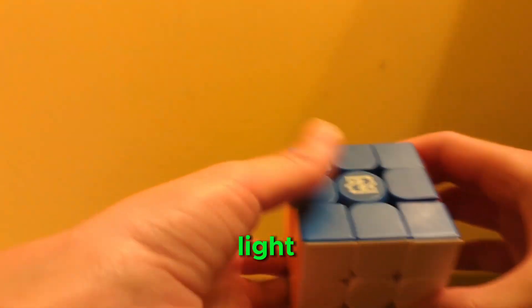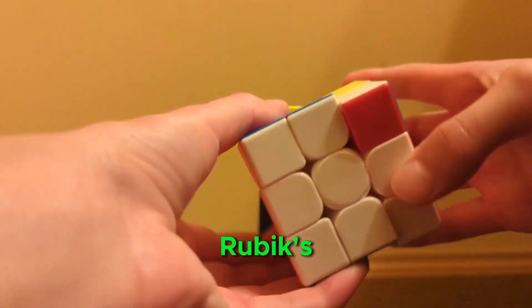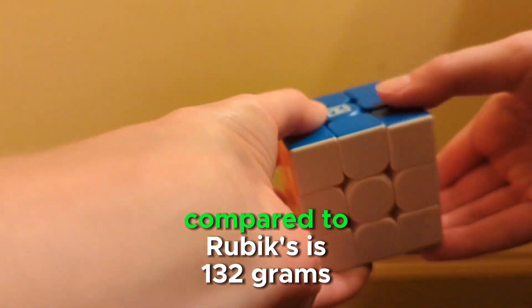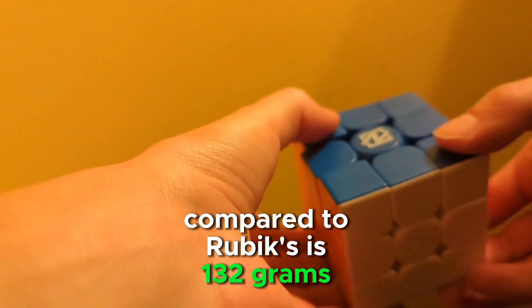The next cube is also very light compared to the original Rubik's, coming in at only 90 grams. Compared to Rubik's is 132 grams.